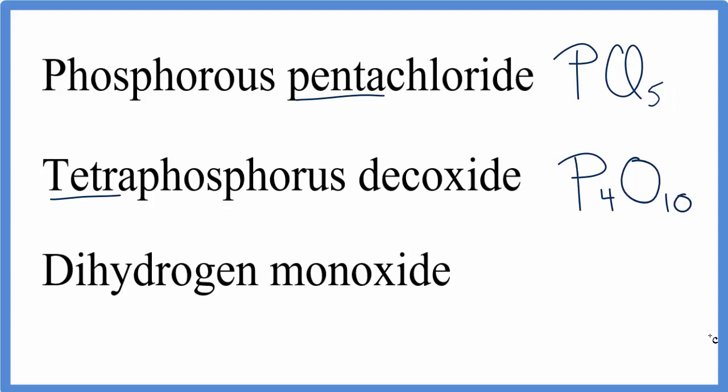Finally, for dihydrogen monoxide, a compound you might recognize. We have hydrogen, that's H, oxide, that's O, we have di, that means two, mono, that means one, but we don't need to write the one, and we have H2O. And that's really all there is to writing the formulas for molecular compounds.